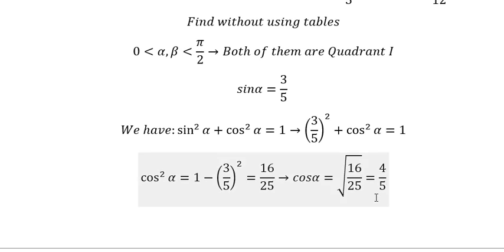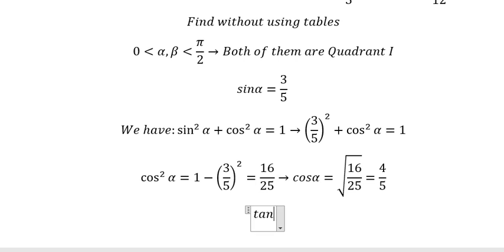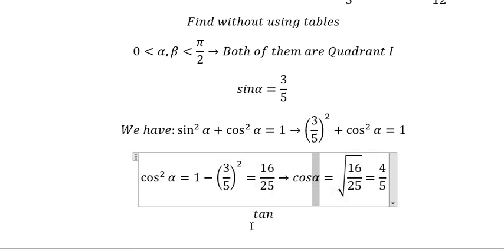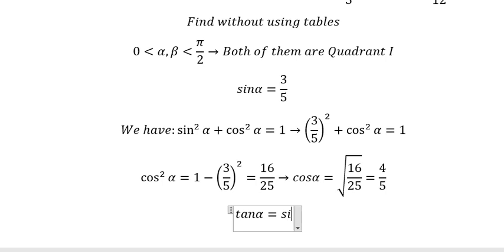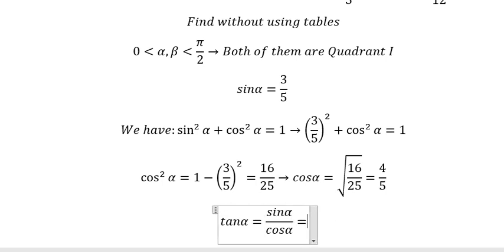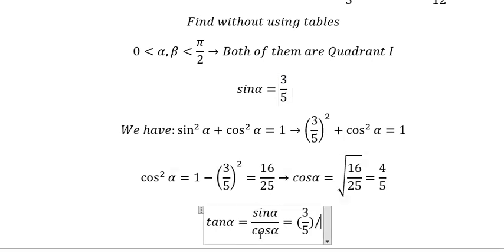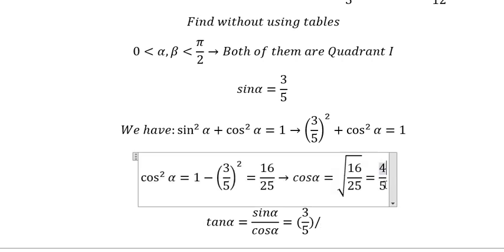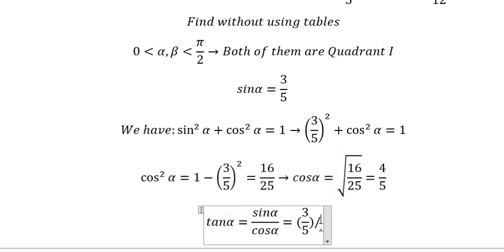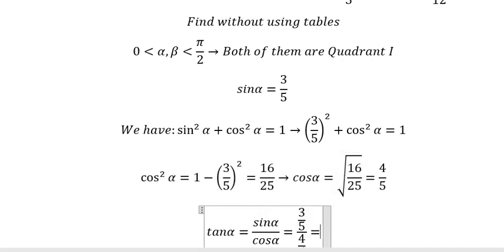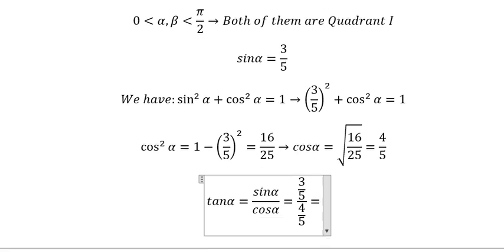For the next one, we need to find tan alpha. That is sine alpha over cosine alpha. Sine alpha is 3 over 5, and cosine alpha is 4 over 5, so tan alpha equals 3 over 4.